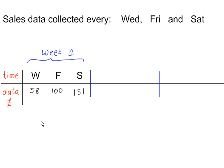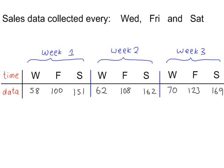In this example, we have data collected three times every week on Wednesdays, Fridays, and Saturdays. This is sales data, so you have the sales figures here in pounds. This is for week one, for week two, and for week three. So we have the regular collection of data at regular time intervals. This is a time series.